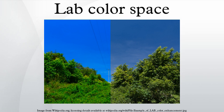Unlike the RGB and CMYK color models, LAB color is designed to approximate human vision. It aspires to perceptual uniformity, and its L component closely matches human perception of lightness, although it does not take the Helmholtz-Kohlrausch effect into account. Thus, it can be used to make accurate color balance corrections by modifying output curves in the A and B components, or to adjust the lightness contrast using the L component. In RGB or CMYK spaces, which model the output of physical devices rather than human visual perception, these transformations can be done only with the help of appropriate blend modes and the editing application.